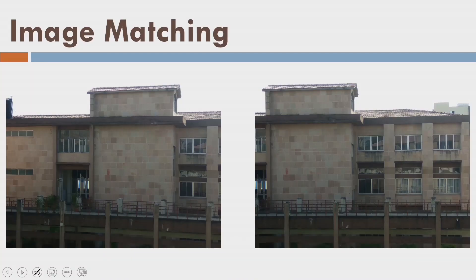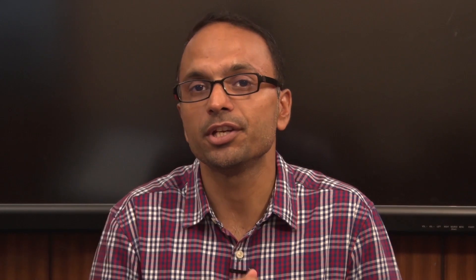Let us go ahead and learn how to do image matching automatically. Here I can see two images of the same building, and this edge corresponds to this edge. You can also find other common features between the two. If you integrate these two images you will get a bigger image covering a larger area. So, how to perform image matching — that is the most important element today.